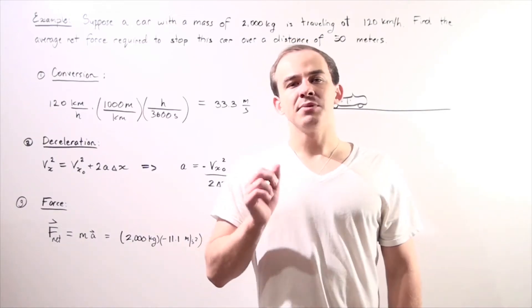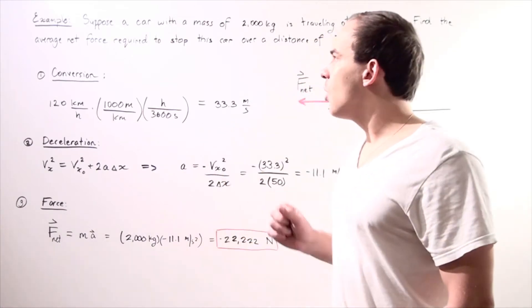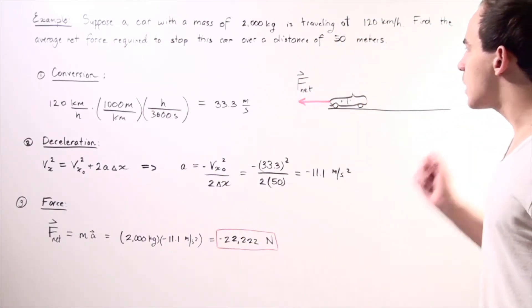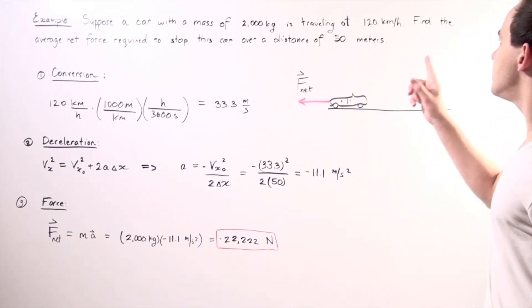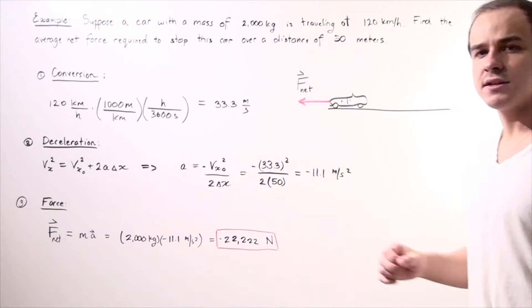Let's examine a quick application of the second law of motion. Suppose a car with a mass of 2,000 kilograms is traveling at a speed of 120 kilometers per hour along the x-axis in the positive direction.